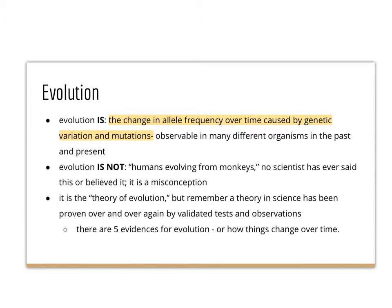We'll get into typical examples of evolution in natural history, but even if you think of humans: the average height for men now is near 6 feet, but if you look back to the 1800s and 1700s, men and women were a lot shorter. Over a period of time, because of lots of different factors, humans have changed — we are now on average taller. That's just a change in our genes over a period of time.